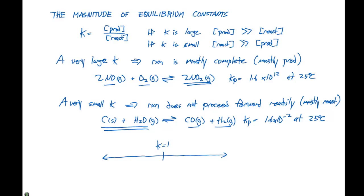And if we have a K smaller than 1, we're going to be reactant favored.